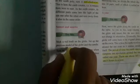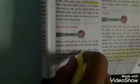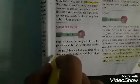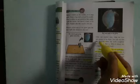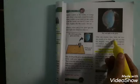Sunset and sunrise. Try this. Stick a red bindi on the globe. Set up the previous model of the globe and the candle. Turn the globe anti-clockwise. Note when it is sunrise, noon and sunset at the location of the bindi. After one sunrise, note when the next one occurs at the bindi. You will see that this happens when the earth completes one rotation. That is, when it makes one complete turn around itself.